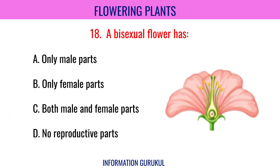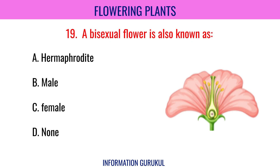A bisexual flower has both male and female parts. A bisexual flower is also known as Hermaphrodite.